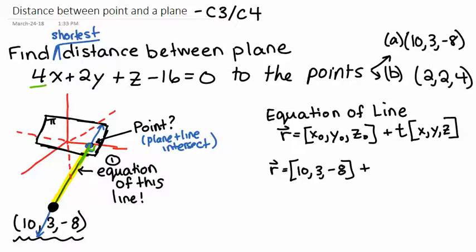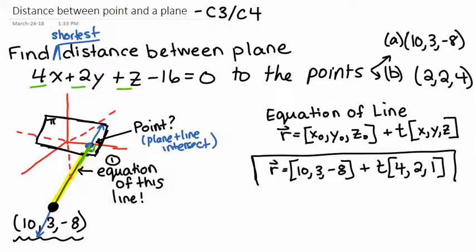So we're going to use our normal vector as our direction vector. So that vector is 4, 2, 1. So now we've got the equation of that blue line. Perfect. So we use the point and the normal vector.